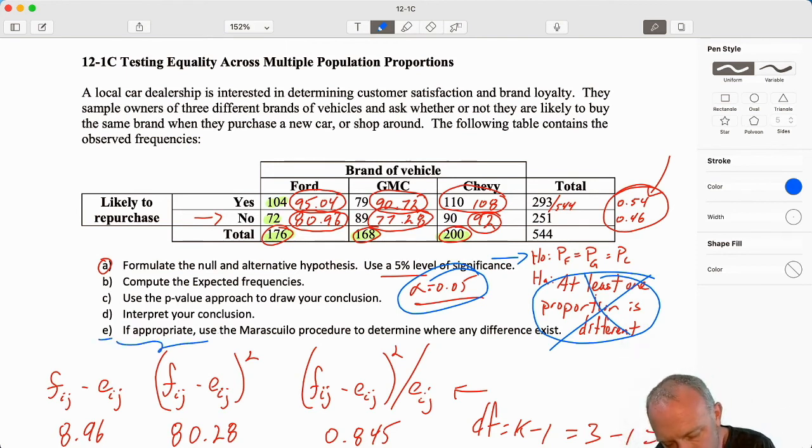Part E, if appropriate, use the Marascuilo procedure to determine where a difference exists. We've already found no evidence of any difference. So, given that we are unable to reject, we already have evidence to show that there's no differences here. However, it is not appropriate to do this procedure to identify where the difference exists. So, we do not have to do Part E.